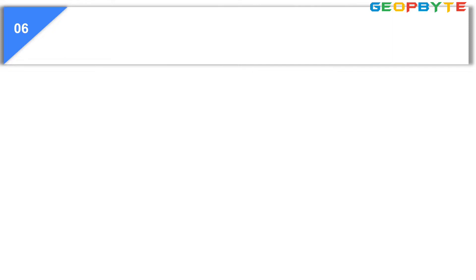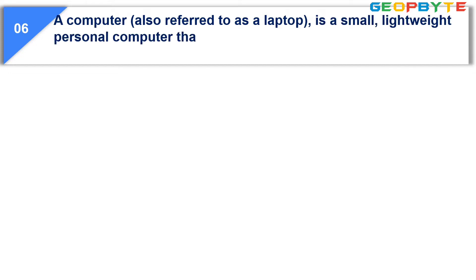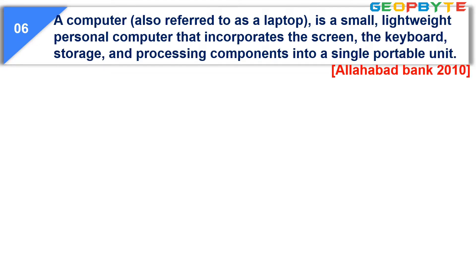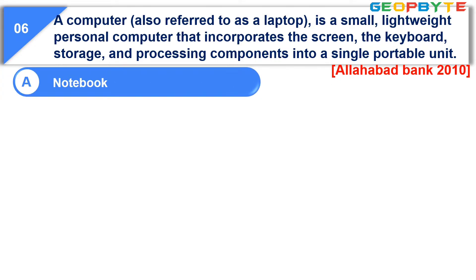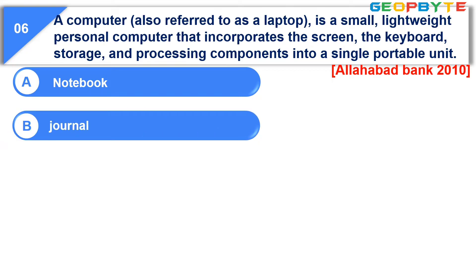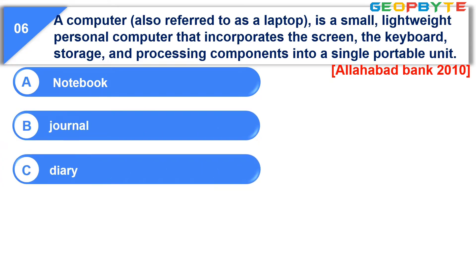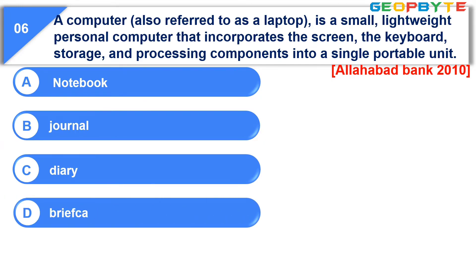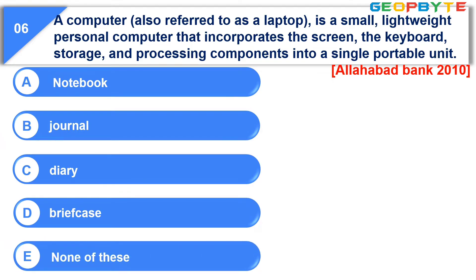Moving to question number six. A computer also referred to as a laptop is a small lightweight personal computer that incorporates the screen, the keyboard, storage and processing components into a single portable unit. Option A: Notebook. Option B: Journal. Option C: Diary. Option D: Briefcase. Option E: None of these. The correct answer is option A, Notebook.